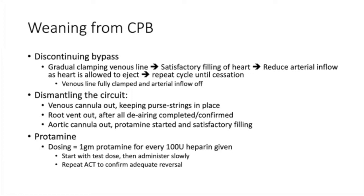Dismantling the circuit is done stepwise: start with venous cannula removal, keeping purse strings in case one needs to return to bypass. Remove the aortic root vent once de-airing is complete. The final step is removal of the aortic cannula and closure of those purse strings. Once everything looks good and hemostasis is achieved, give a test dose of protamine without evidence of protamine reaction. The protamine dose is 1 mg per 100 units of heparin given — aided by rechecking the ACT. Critically, do not give protamine while the patient is still on bypass in any form, as it can cause acute thrombosis of the pump and an acute emergency if given out of sequence.